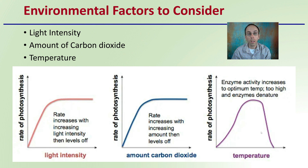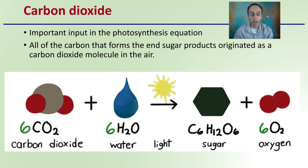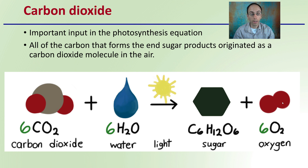You want to keep in mind all these factors that your plant is growing in. We're going to focus on the carbon dioxide aspect. It's an important input to the photosynthetic equation: carbon dioxide plus water plus sunlight will produce sugar and oxygen. All of the carbon that forms in the sugar end product originated as carbon dioxide molecules in the air — that's why there are six of them, because we have to make a six-carbon sugar.